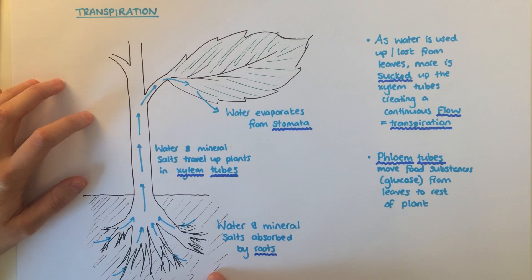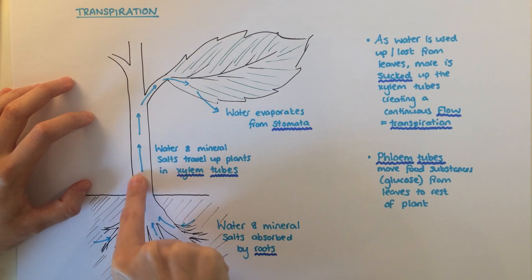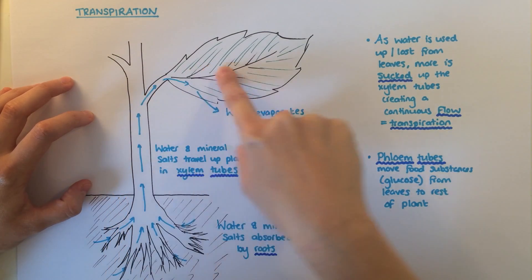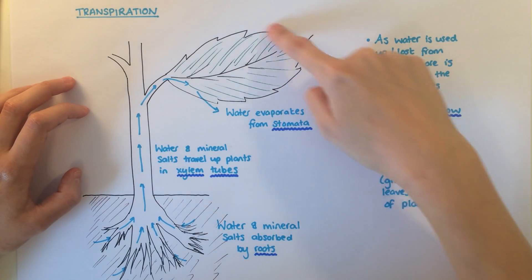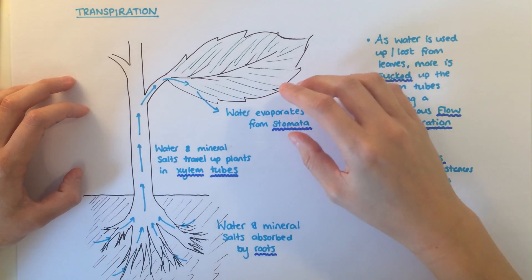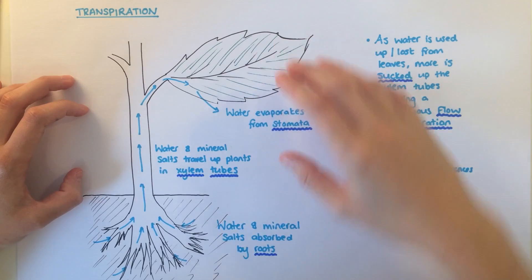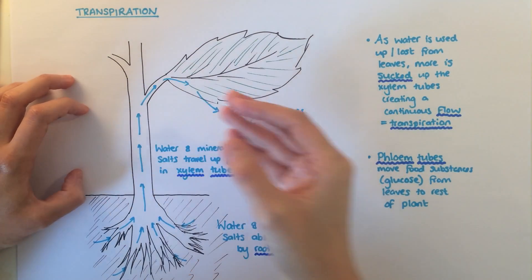Transpiration is the movement of water from the roots, where it is absorbed from the soil, up the stem in tubes called xylem tubes, to the leaf, where it is used or evaporates from the stomata. It is actually the leaves that drive this process, as water is used or lost.